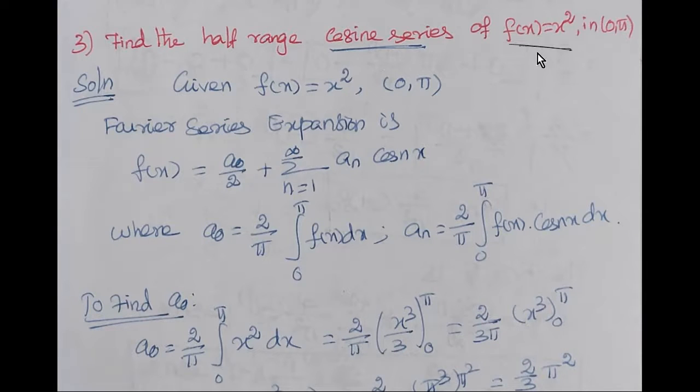Find the half-range cosine series of f of x equal to x squared in 0 to pi. Given f of x equal to x squared, in the half-range cosine series, a0 by 2 plus summation an cos nx.